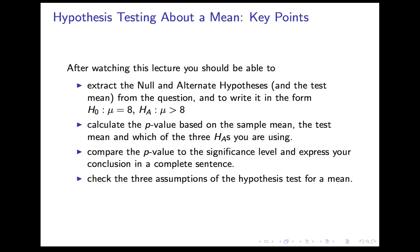We are all done. After watching this lecture, you should be able to extract the null and alternate hypotheses for a question about a mean and be able to write it in the form H₀: μ = μ₀, such as 8, and Hₐ: μ is less than, greater than, or different from μ₀, which is 8 in this case. You should be able to calculate the p-value based on the sample mean, the test mean, and which of the three alternate hypotheses you're using, exactly, using the template, exactly as you would with the test proportion, except this time we are using a template instead of doing the calculation by hand. You will always be able to use the template for testing about the mean. I will always expect you to do the testing about a proportion by hand. You should be able to compare the p-value to the significance level, express your conclusion in a complete sentence exactly the same as a proportion, and you should be able to test the three assumptions of the hypothesis test for the mean. Same assumptions as for confidence interval for the mean, so that should be nothing new.